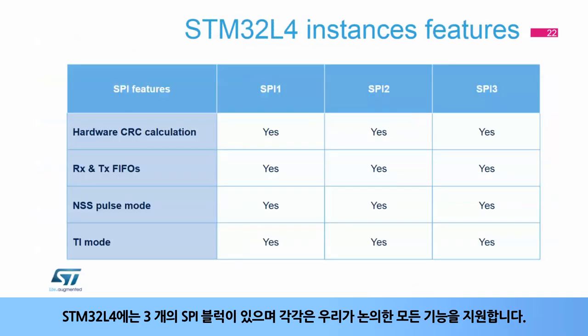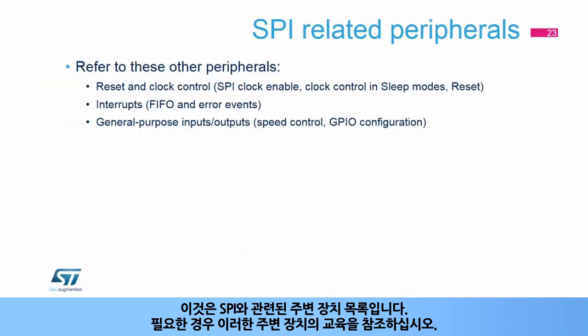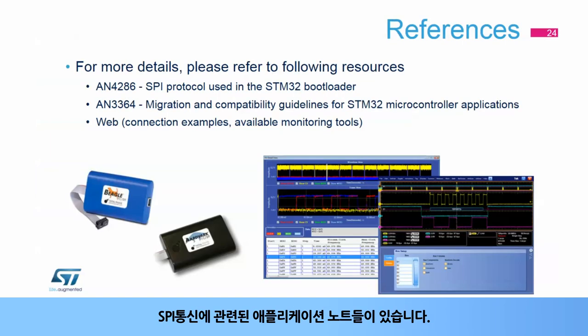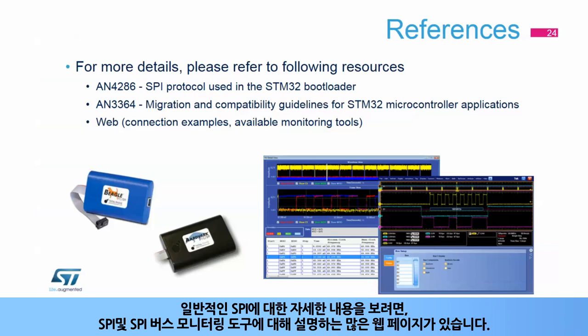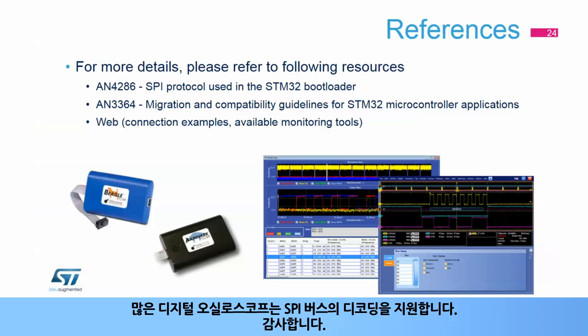There are three SPI instances within the STM32L4 and each support all the features we have discussed. This is a list of peripherals related to the SPI. Please refer to these peripheral trainings for more information if needed. There are some dedicated SPI application notes. To learn more about the SPI generally, there are many webpages that discuss SPI topics and SPI bus monitoring tools. Many digital oscilloscopes support direct decoding of the SPI bus.